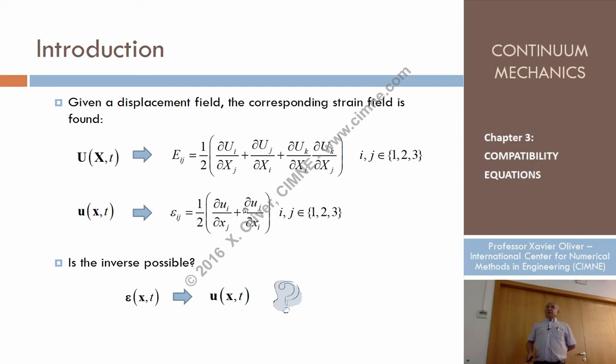just by differentiation with respect to space of this vector field, we can obtain the nine components, or by symmetry, the six different components of the strain tensor. Given the displacements, obtaining the strains is a trivial issue, just differentiating.